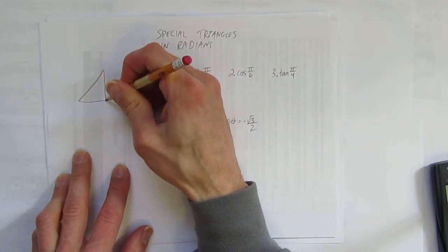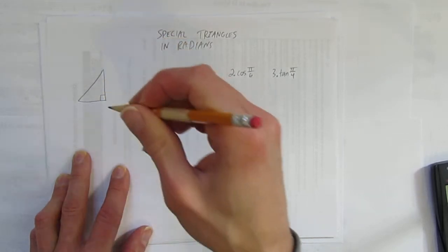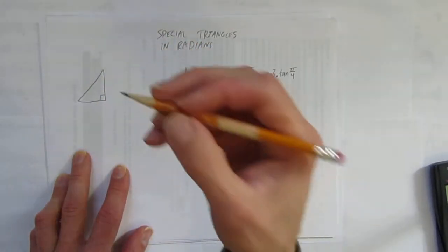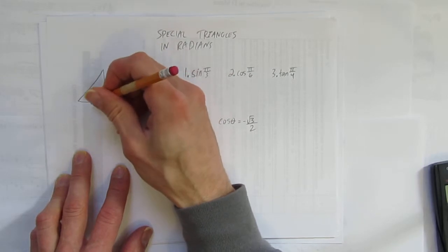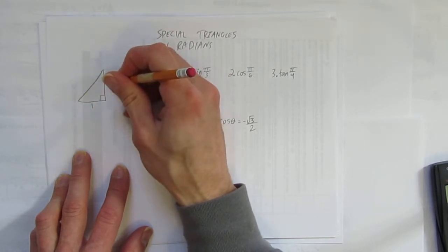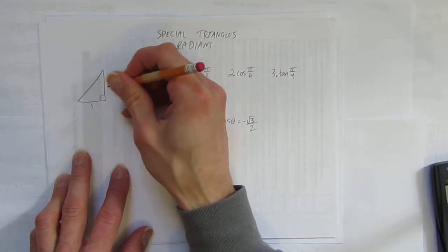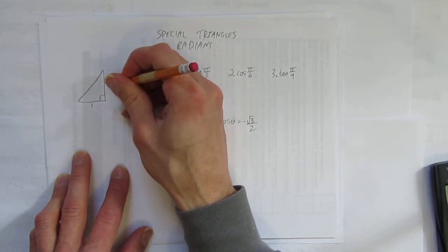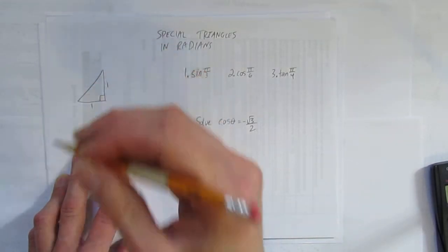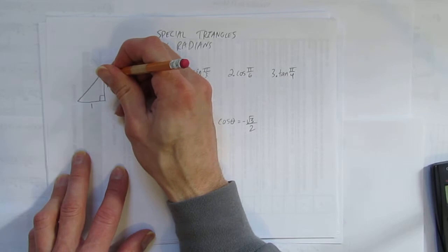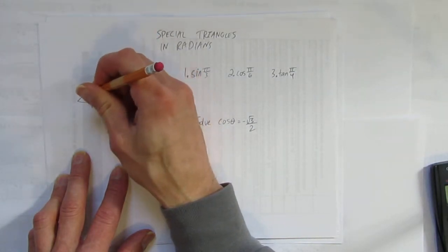Start with the first special triangle. I've drawn it looking isosceles, but it doesn't matter as long as you label the sides and angles correctly. The first special triangle is an isosceles triangle — both legs are 1, and their corresponding angles are 45 degrees, which we write in radians as pi over 4.